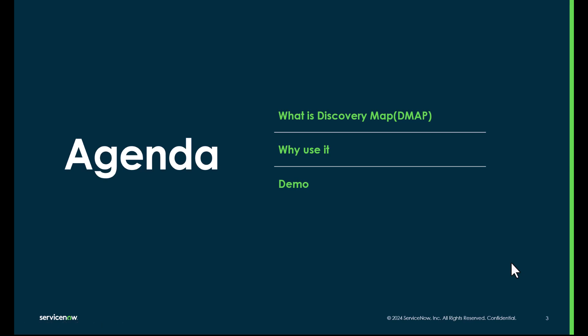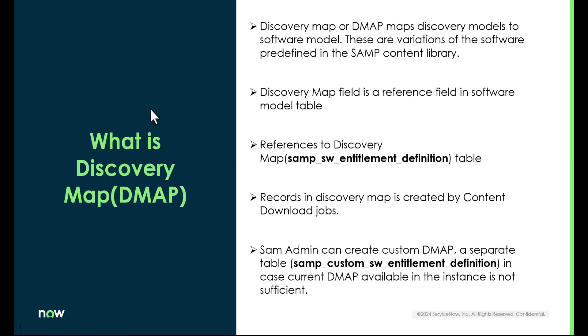This is our safe harbor statement. We will look at what Discovery Map is from a Software Asset Management perspective, why we should use it, and then we will see a demo from a Washington instance. Discovery Map, or DMAP in short, is basically a configuration which maps the discovery models with the software model.